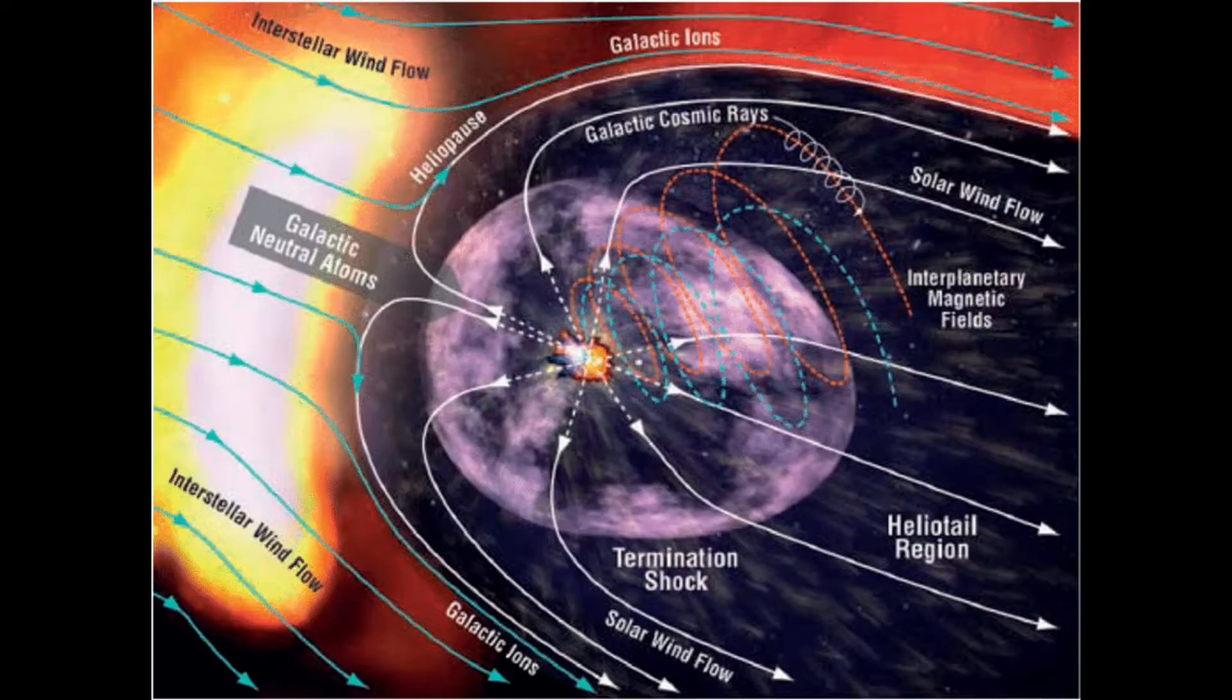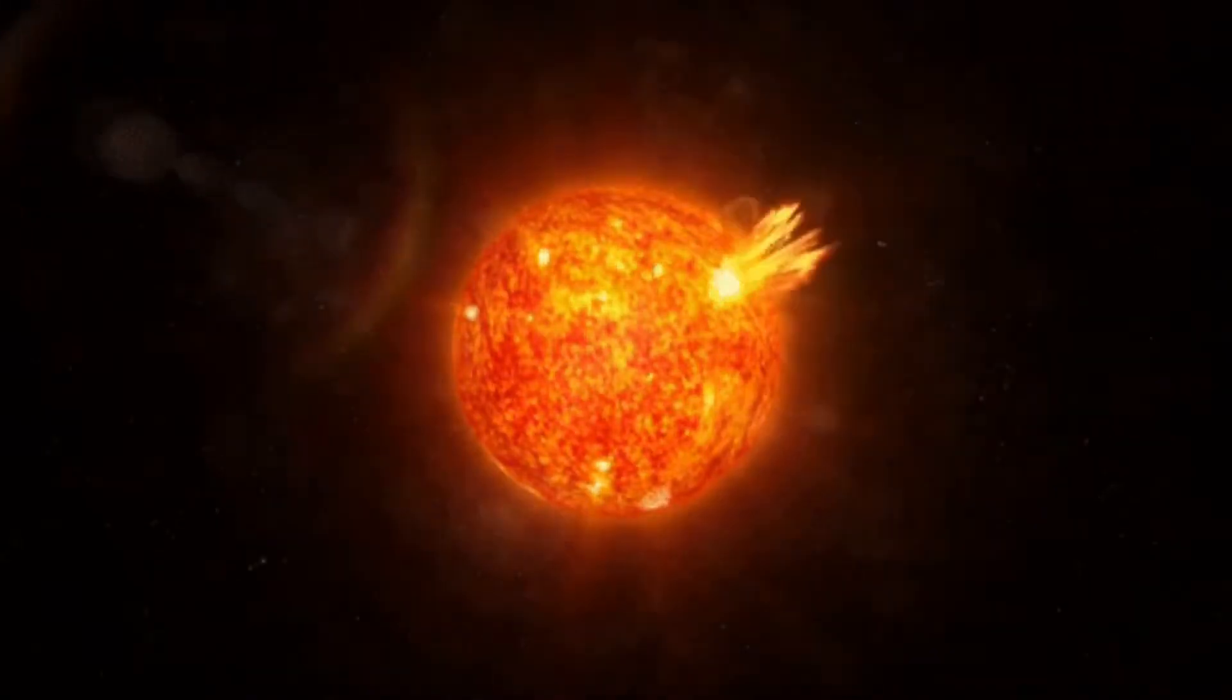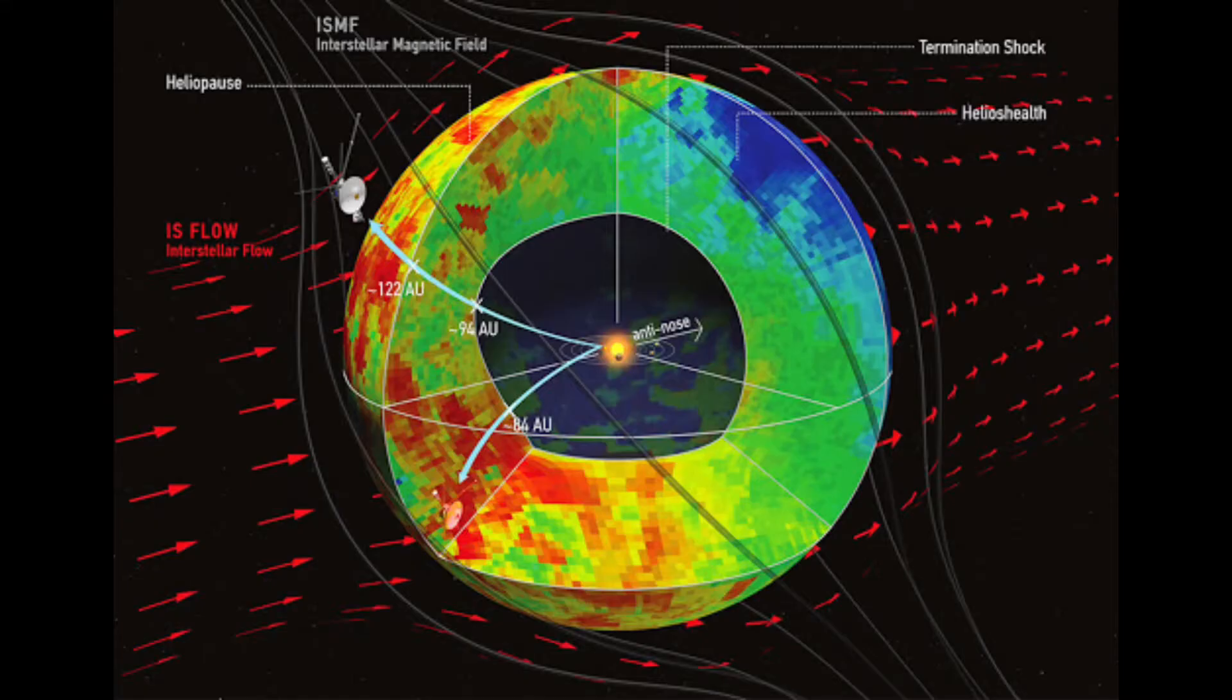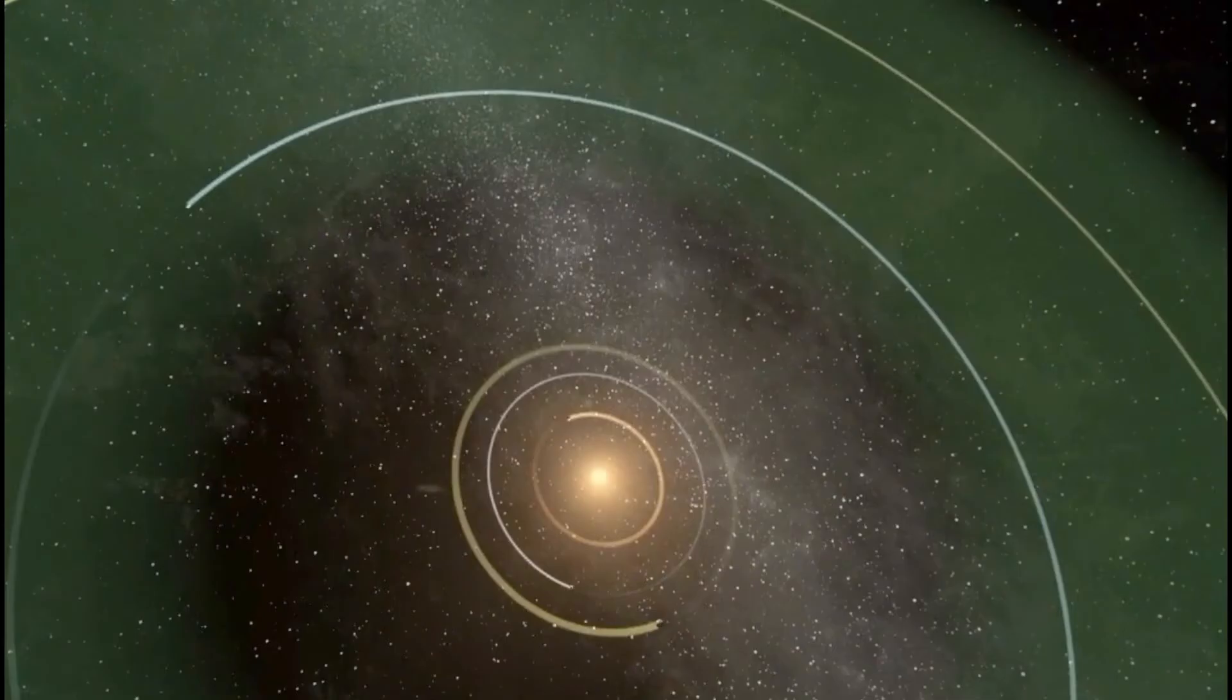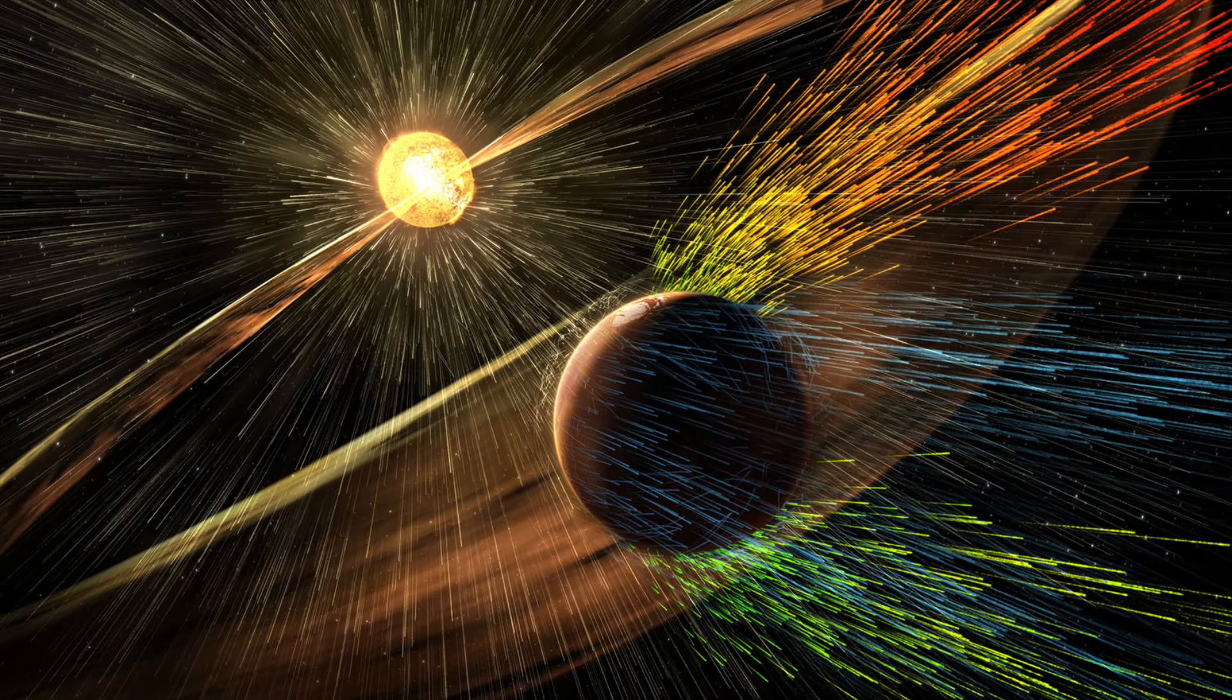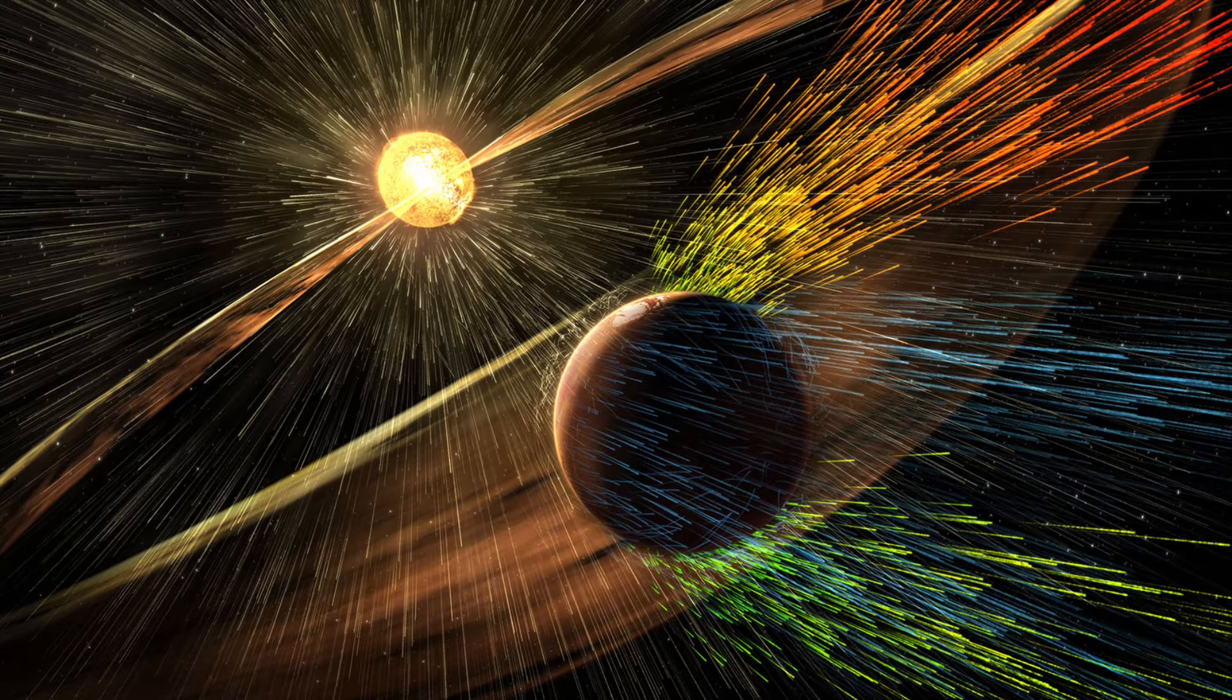We now have a three-dimensional map of one of the boundaries of the solar system. For the first time, astronomers have been able to determine the shape of the heliosphere, the boundary that marks the end of the influence of our star's solar wind. This discovery could help us better understand the environment of the solar system and how it interacts with interstellar space.